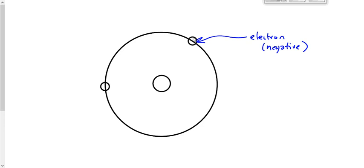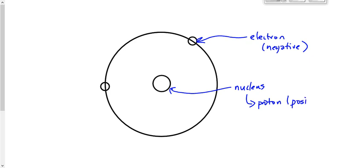We've drawn it a little bit bigger than we probably should have, but we need to be able to see it. What is that thing called? This small, heavy thing in the middle of this atom? It's the nucleus. And what makes up the nucleus? What's inside the nucleus? Two things. Inside the nucleus are the protons, and the protons are positively charged. Protons are positive. And the other thing we have inside the nucleus is the neutron. And the charge of a neutron? It's neutral.